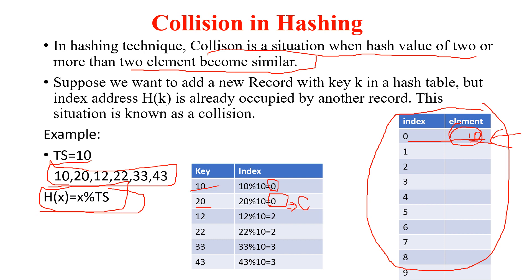So similarly, I have not stored 20 — I have just stored 10 only. Now coming to the next element, 12. If I calculate the index of 12 using the division method, 12 modulus 10 gives 2. We go and check the hash table — is the second index free? Yes, the second index is free. So 12 is going to be stored at the second index.